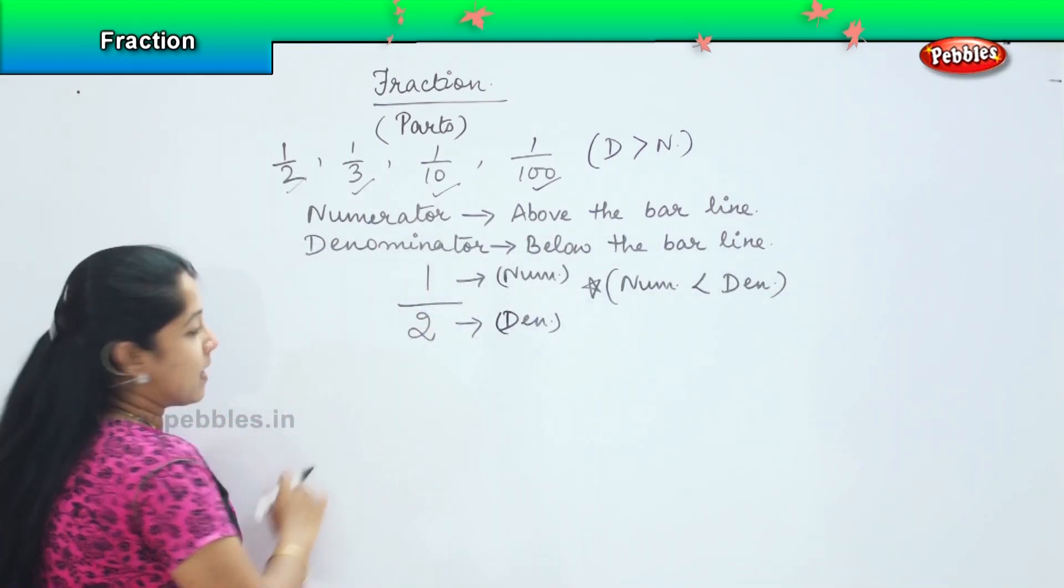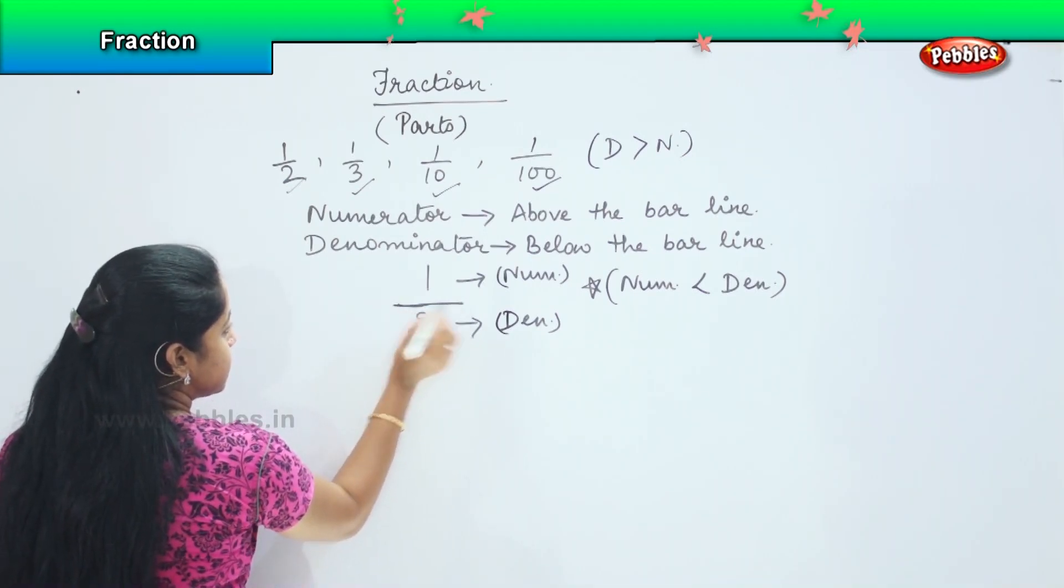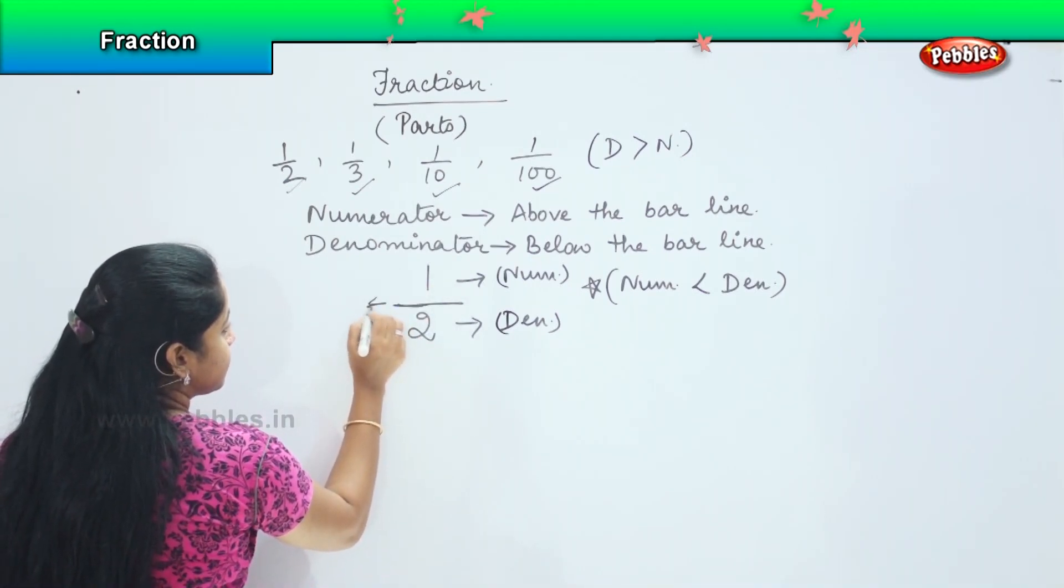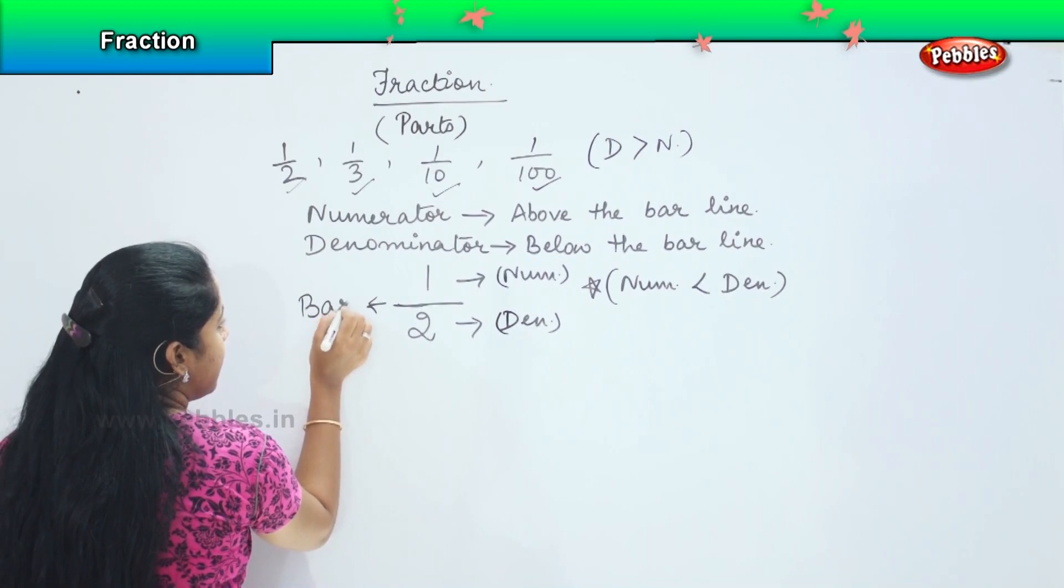And this line which is dividing both numbers, this is called as the bar line.